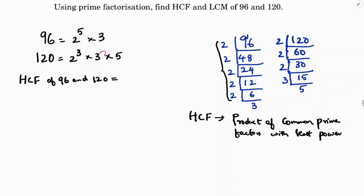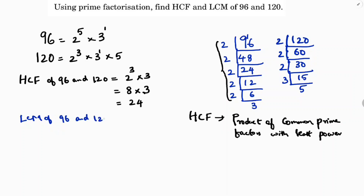Between 2 power 5 and 2 power 3, the least is 2 power 3. And for 3, it is 3 power 1 in both, so it stays as 3. So HCF is 2 cube into 3, which is 8 into 3, that is 24. So HCF is 24.